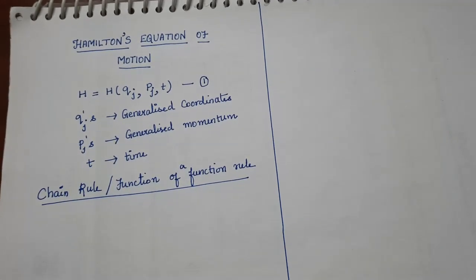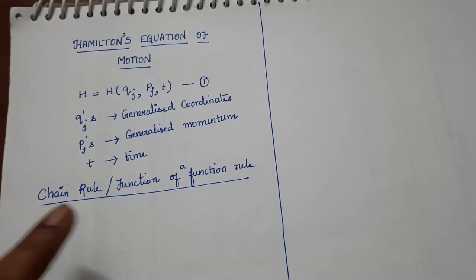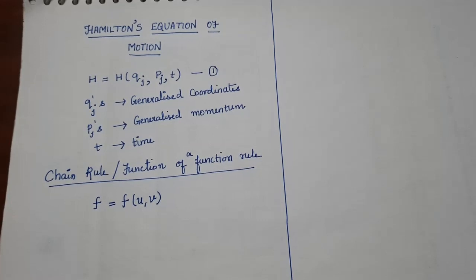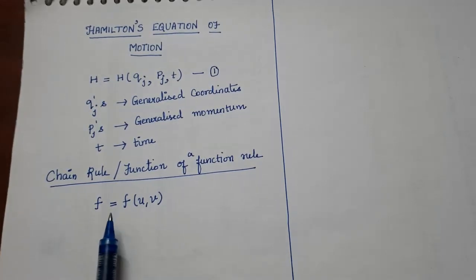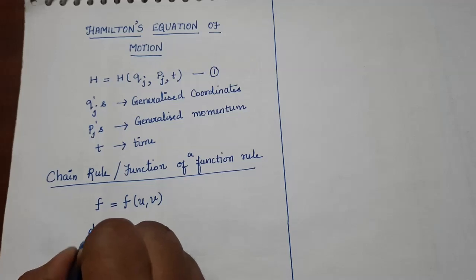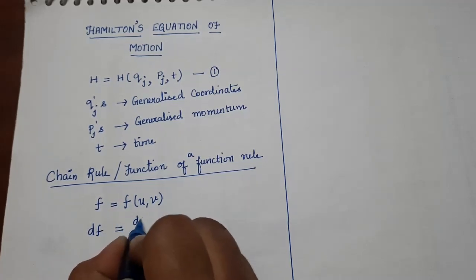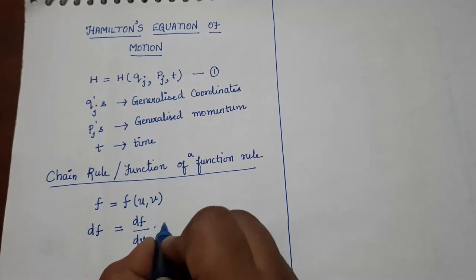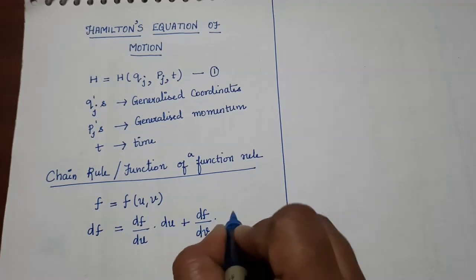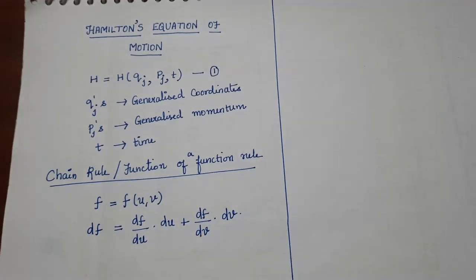Next, let us recall the chain rule, or function-of-a-function rule. This rule will help us find the differentials here. If we have a function that depends upon more than one variable and we need to find its differential, the formula is: df = (∂f/∂u)du + (∂f/∂v)dv. This chain rule will help us perform the differentials.